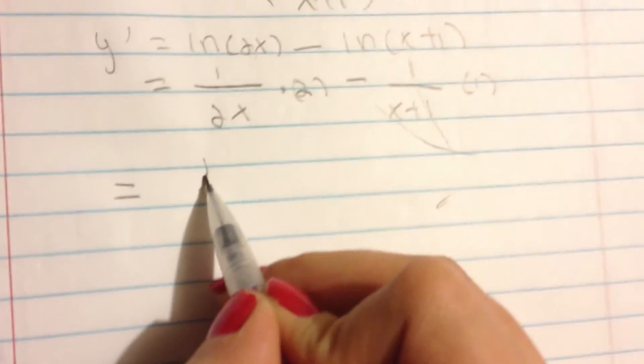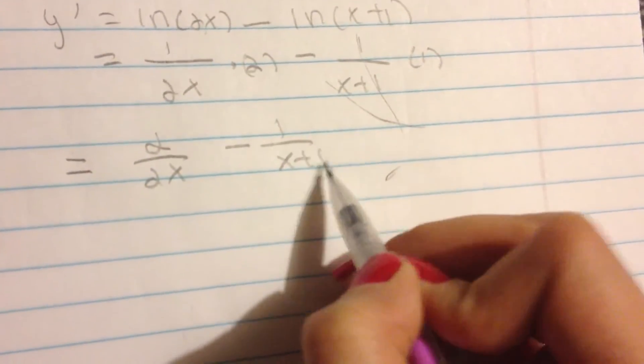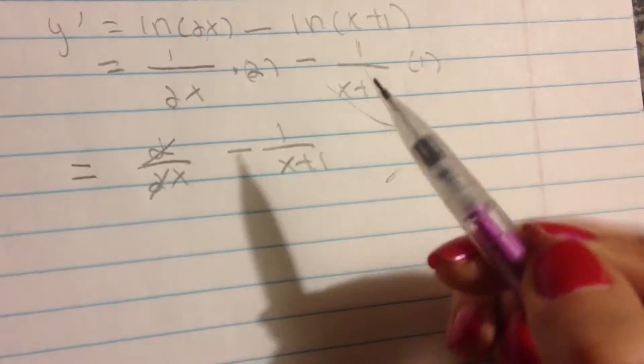Now we have to multiply this out. So we have 2 over 2x minus 1 over x plus 1. We can cross out a 2 over here and over here.